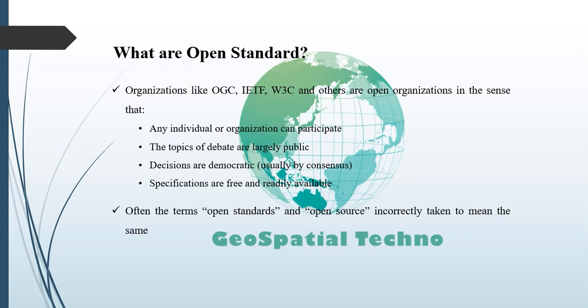Often the terms open standards and open source are confused or incorrectly taken to mean the same thing. Open standards are a specification developed in an open process. Open source is software made freely available under a license that allows the program to run for any purpose, to study how the program works, to adapt it, and to redistribute copies including modifications. The OGC board of directors and staff don't favor either proprietary software or open source software — OGC cares about interoperability, the ability to share geospatial information.